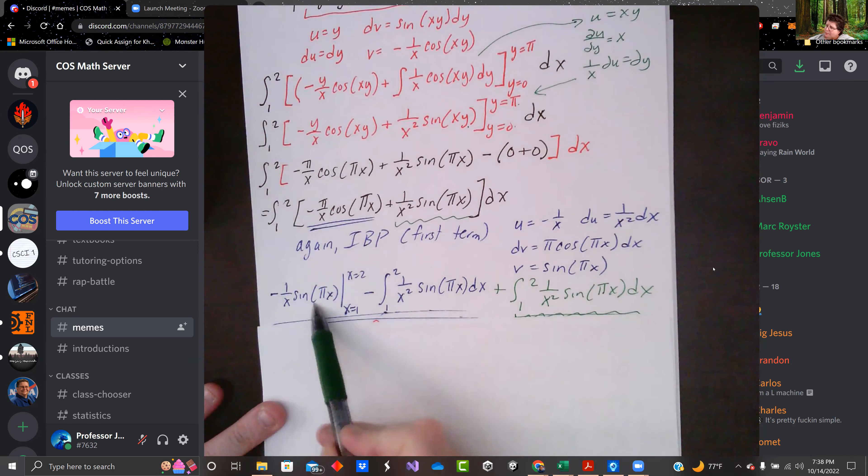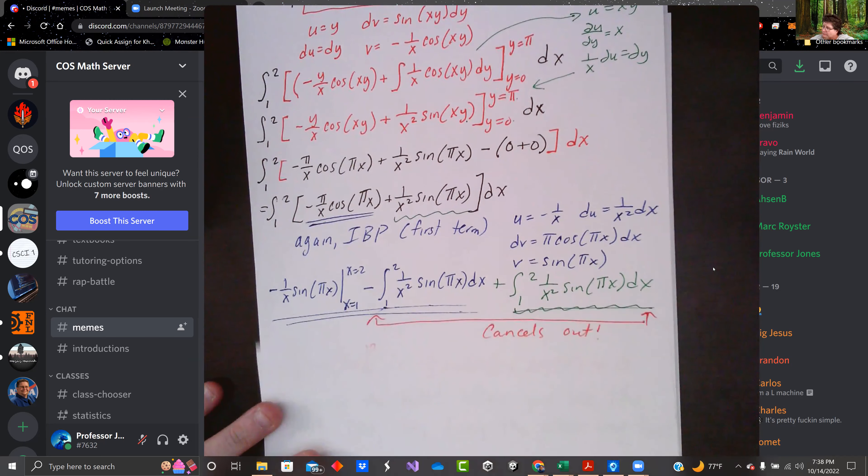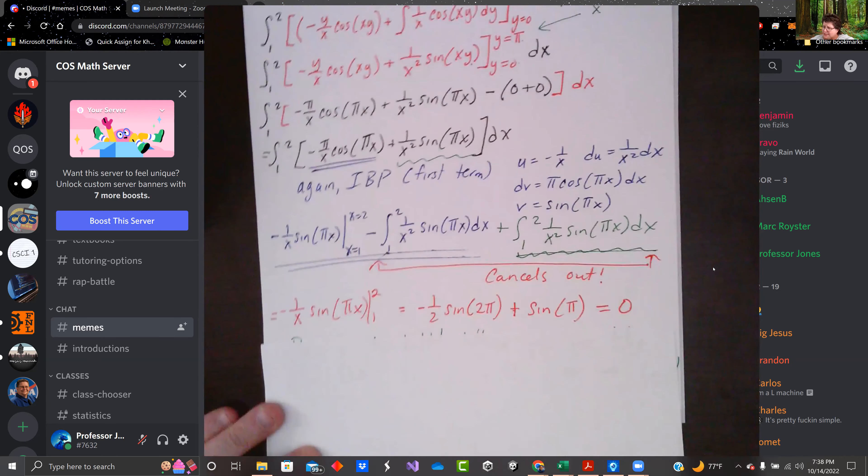You'll notice that when we do it, we get the exact second term, but the opposite. So they will cancel out. And when we evaluate, we just get zero.